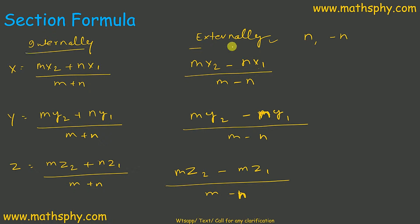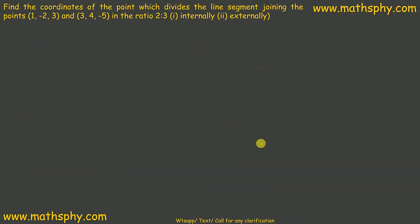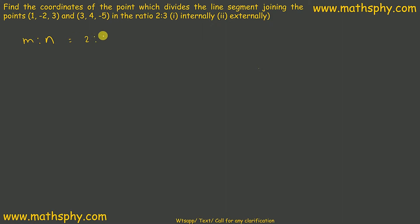The question says: find the coordinates of the point which divides the line segment joining the points (1, −2, 3) and (3, 4, −5) in the ratio 2:3 internally as well as externally. Let's take internally first. Here M is 2 and N is 3.